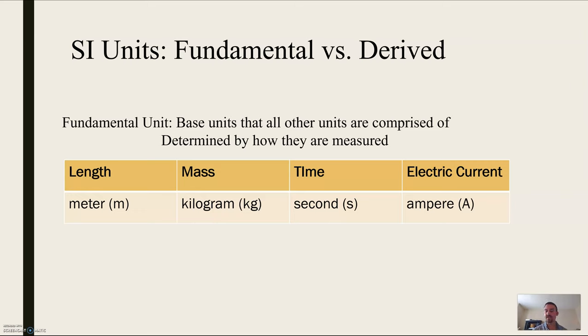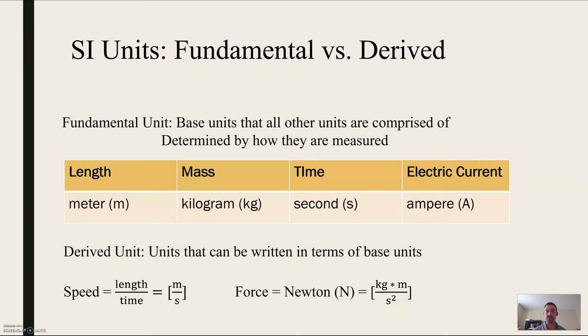And so from these base units, all of the other units that we're going to be dealing with can be written in terms of these base units. So a couple examples of that would be speed. Speed is a measure of change in length over change in time. So it's going to have units of meters divided by seconds, which is the fundamental units for length and time. And then this idea of force, if I'm pushing on something, we're going to get to this later on, but this has units of newtons, but newtons, which is a derived unit can be written in terms of kilograms, meters, and seconds. So all of these derived units can be boiled down to the three fundamental units that we'll be using in this course.